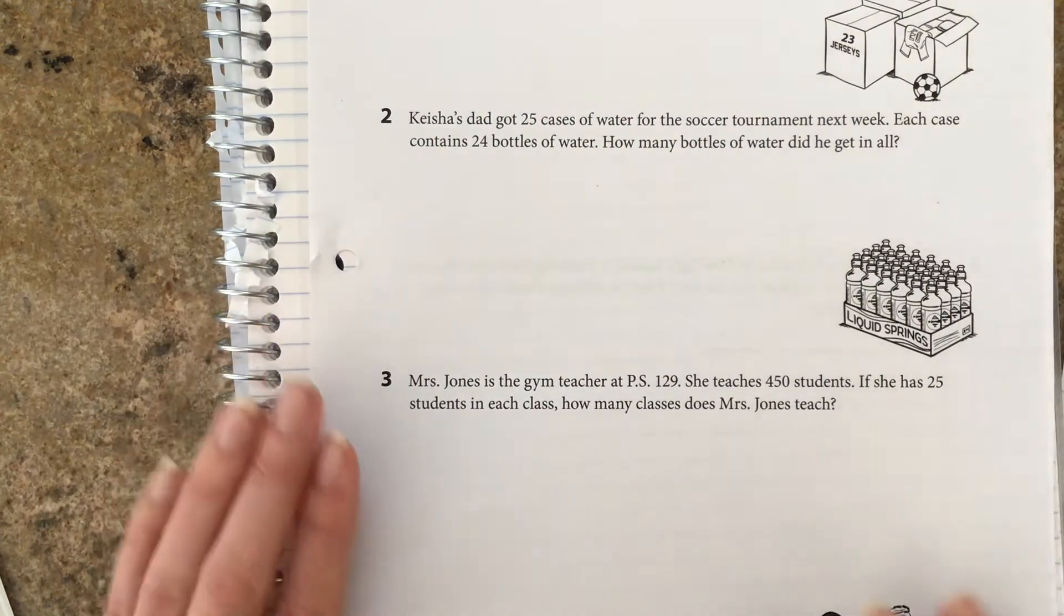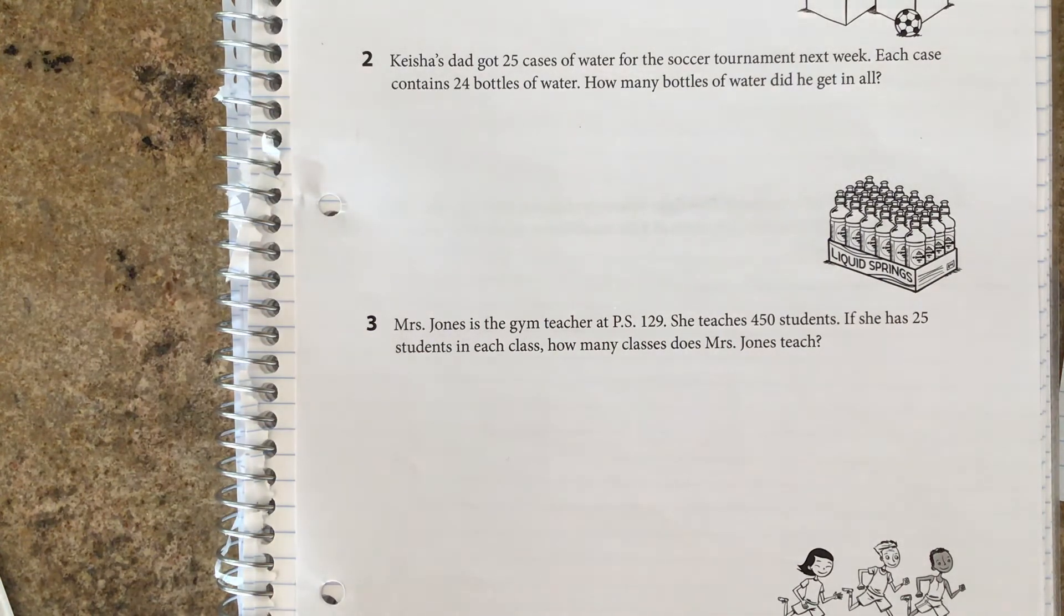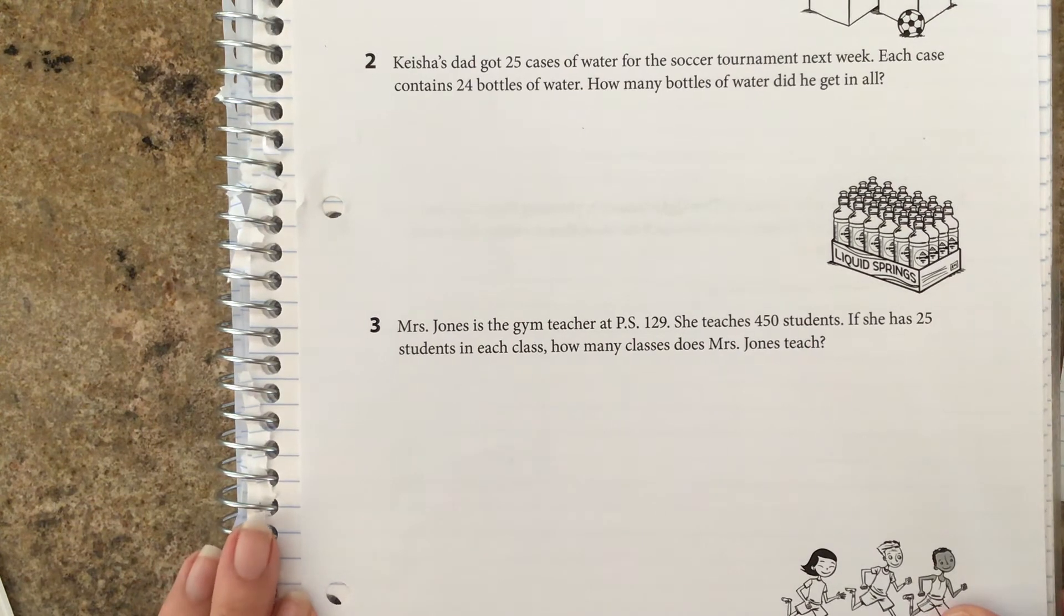Okay, last one. Mrs. Jones is the gym teacher at PS129, Public School 129. She teaches 450 students. If she has 25 students in each class, how many classes does Mrs. Jones teach? So this one's switching it up on us. This one's asking us the total is 450 and there's 25 in each class, so how many classes? So this is going to be a division problem. You're going to take 450 and divide it by 25. So go ahead and pause.